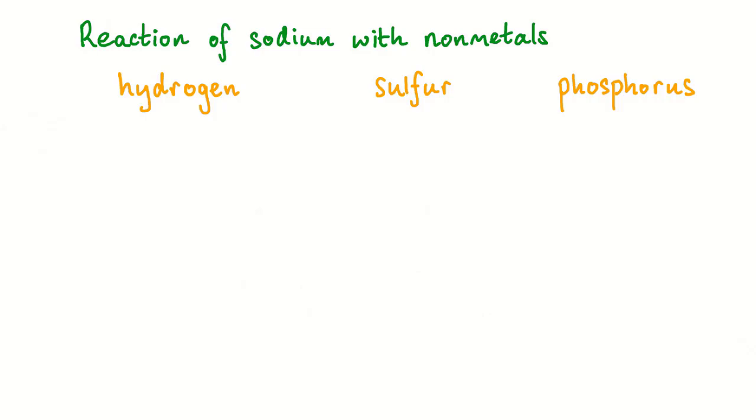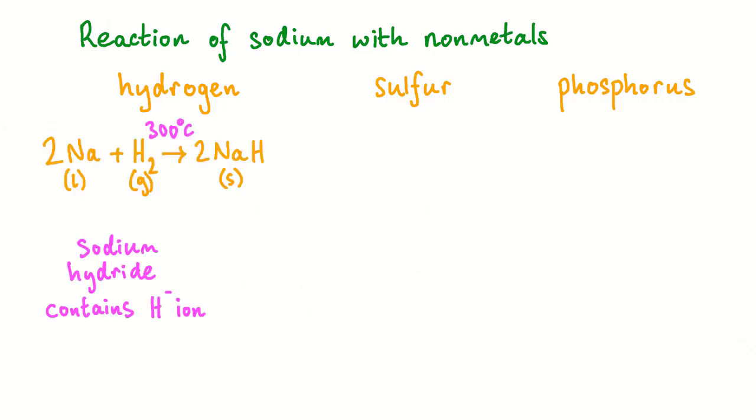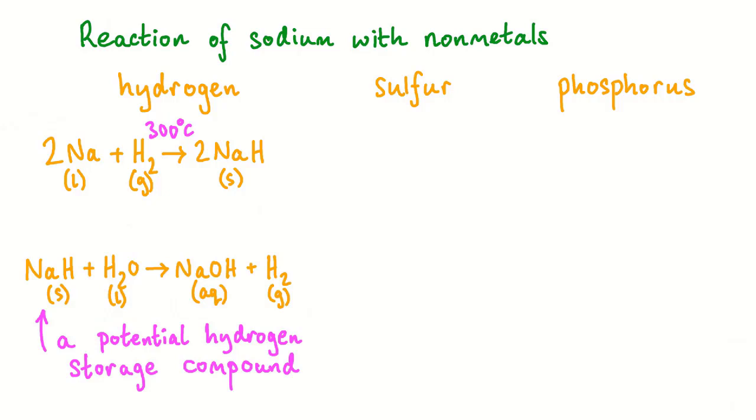Direct combination of the elements is possible if the sodium is heated first. Liquid sodium reacts with hydrogen gas at around 300 degrees Celsius to form sodium hydride. This contains the negatively charged hydride ion. Hydrides are reducing agents and sodium hydride will react with water to produce sodium hydroxide and hydrogen gas. For this reason, hydrides have been investigated as a means of storing hydrogen gas for use in fuel cell vehicles in a potential future hydrogen economy.